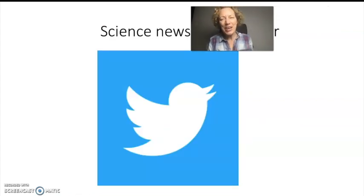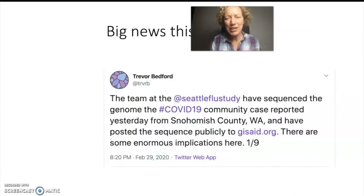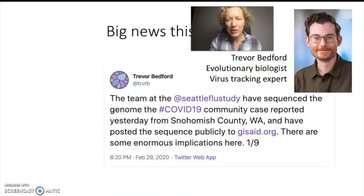So I get a lot of my science news from Twitter these days and that's because a lot of my colleagues post results on Twitter before they publish it in articles and this is especially true for the coronavirus outbreak. And the big news this week a few days ago was that Trevor Bedford announced that the team at the Seattle flu study have sequenced the genome of the COVID-19 community case reported yesterday from Snohomish County. So yesterday was February 28, 2020 and they've posted the sequence publicly. So they've sequenced the virus. This virus has about 30,000 base pairs in genome length and Trevor Bedford and his colleagues and other people immediately can analyze the sequence. He says there are some enormous implications here. So again Trevor Bedford is an evolutionary biologist and he tracks viruses. That's where his expertise lies.